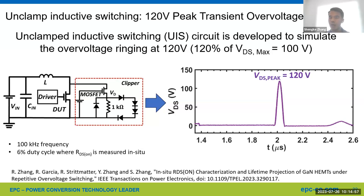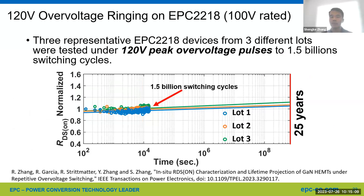Now let's examine how well our GaN FETs performed on the repetitive 120-volt over-voltage testing. We tested three representative EPC-20218 100-volt rated GaN FETs from three different lots and wafers to 1.5 billion 120-volt over-voltage spikes, where very minimal RDS(on) shift was observed. When we project the shift to 25 years using the lifetime model developed using the hot carrier trapping effect, all the data points collected by the UIS circuit fall exactly on the projected line, and the projected shift for 25 years is less than 10%.